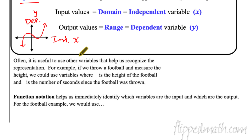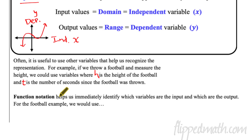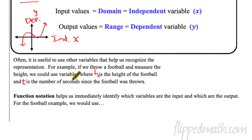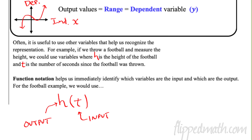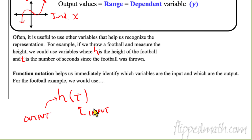It's often useful to use other variables to help us recognize representation. For example, if we throw a football and measure the height, we could use variables where H is the height of the football and T is the number of seconds since the football was thrown. You have to be careful when you pick your variables — I didn't pick S because it looks like a five, and I have to make sure my T has a little tail on it. The point is you can use any variables you want.